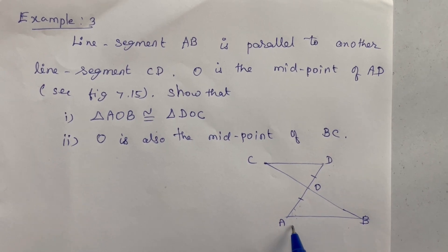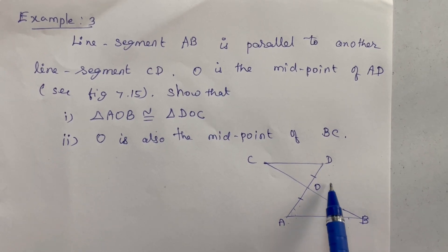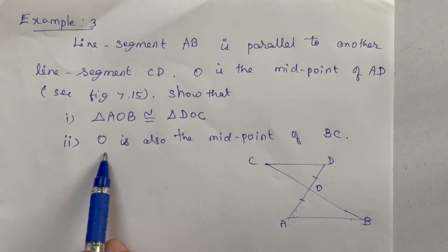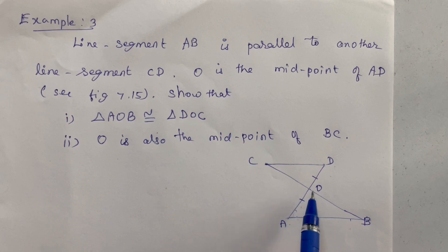Show that triangle AOB is congruent to triangle DOC. Second one, O is also the midpoint of BC.